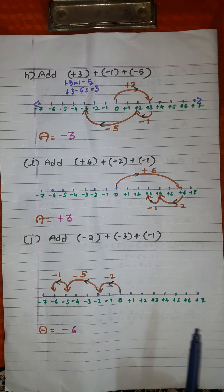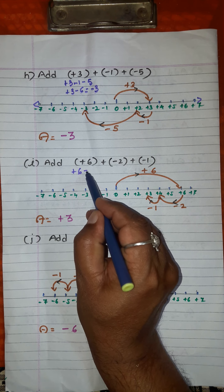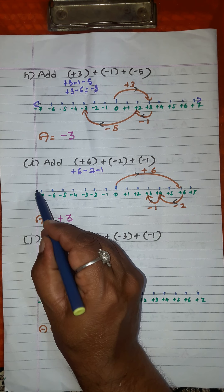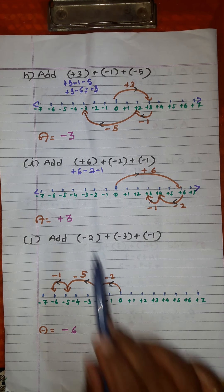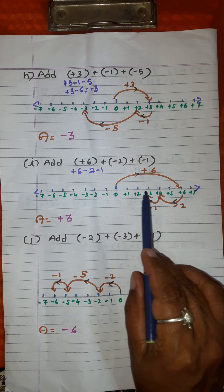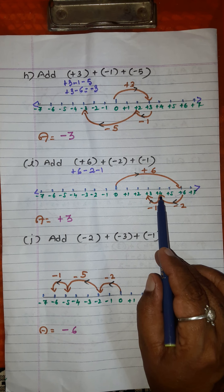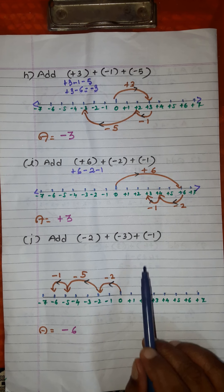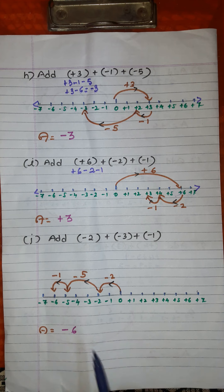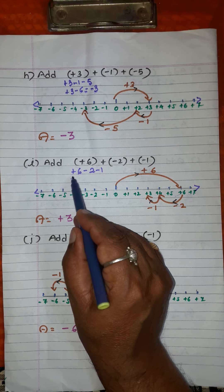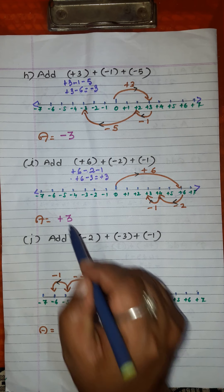Eleventh problem: add plus 6, minus 2, and minus 1. Simplify: plus 6, minus 2, plus into minus is minus 1. Draw a number line, mark positive integers to the right of 0 and negative integers to the left of 0. Plus 6 means move 6 divisions to the right: 1, 2, 3, 4, 5, 6. Minus 2 means move 2 divisions to the left: 1, 2 — you are at point 4. Again move 1 division to the left — you reach the point with value 3. So the answer is plus 3. Mentally: minus 2 and minus 1 is minus 3; 6 minus 3 gives plus 3.